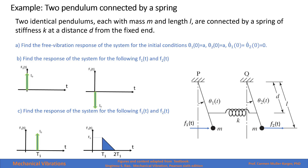In this example, we have two identical pendulums, each of mass M and length L, connected by a spring of stiffness K at a distance D from the fixed end. We would like to find the free vibration response of the system for initial conditions: we give two initial rotations, A to pendulum 1 and A to pendulum 2, with zero initial velocities.